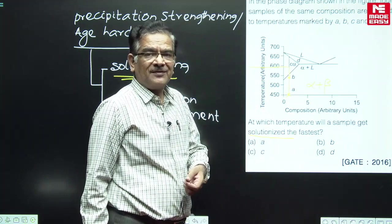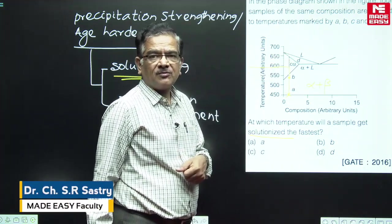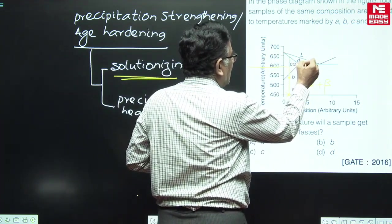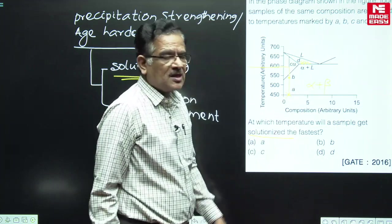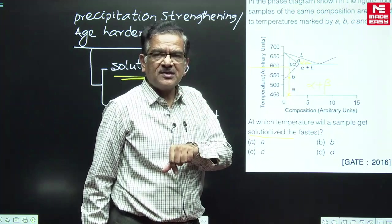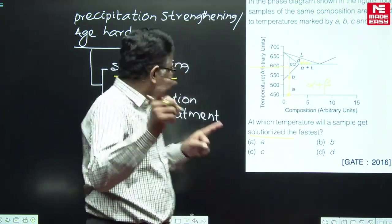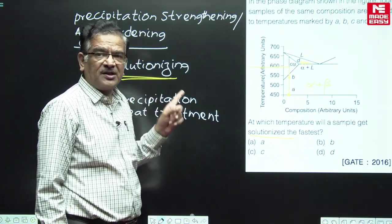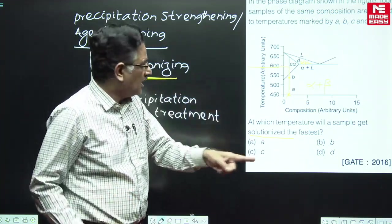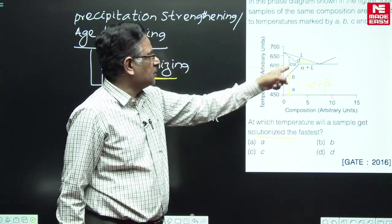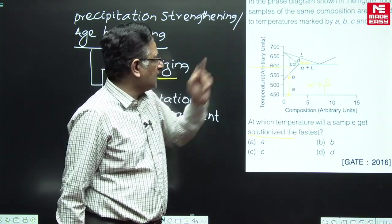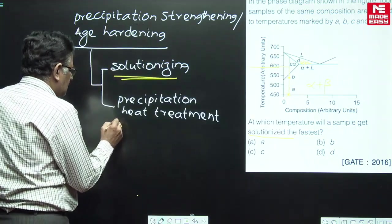Some students have a query: why don't we go up to D? If you go up to D, the phases present will be alpha plus L — that means solid solution plus liquid. There are two phases: liquid phase is one phase and solid solution is another phase. But solutionizing means converting a two-phase mixture into a single-phase solid solution. The alpha plus beta mixture is converted into single-phase alpha only by heating up to temperature C.